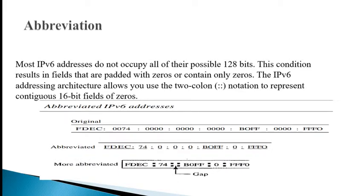Abbreviated IPv6 addresses do not occupy all their possible 128 bits. This condition results in fields that are padded with zeros or contain only zeros. The IPv6 addressing architecture allows you to use the double-colon notation to represent contiguous 16-bit fields of zeros. The abbreviation of an IPv6 address is shown in the figure — the original, the abbreviated, and the more abbreviated form.